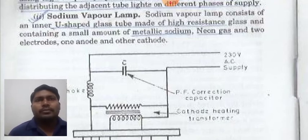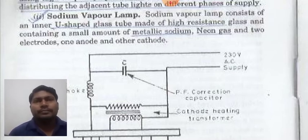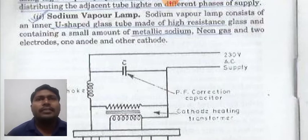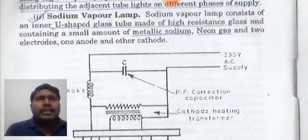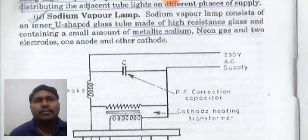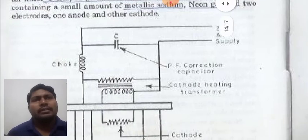Before going to its circuit diagram, let us understand its theory. This lamp consists of an inner U-shaped glass tube which is made of high resistance glass and containing a small amount of metallic sodium, neon gas, and two electrodes — one anode and one cathode. These are the basic construction features of this kind of lamp.